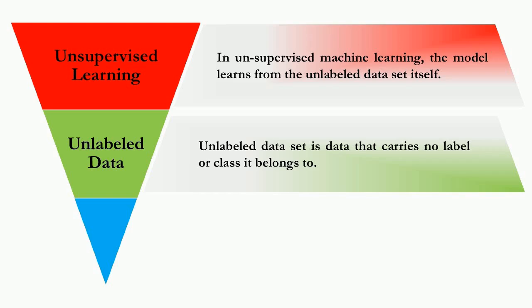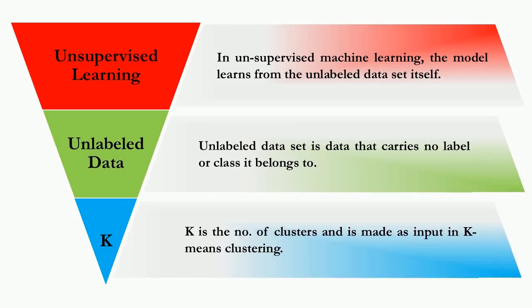That means there is no class labels against each data point. K is the number of clusters that the dataset is to be grouped into. As a sensible AIML engineer, the value of K should be greater than 1.